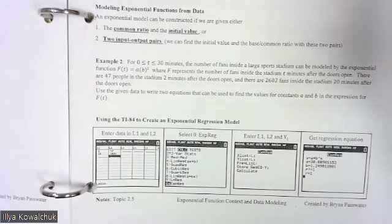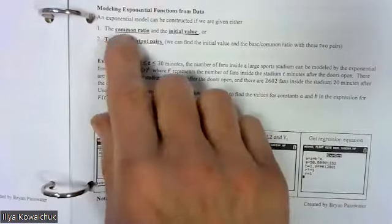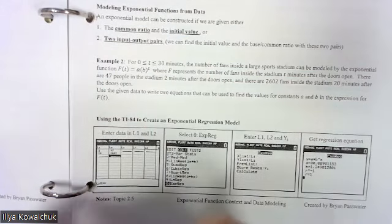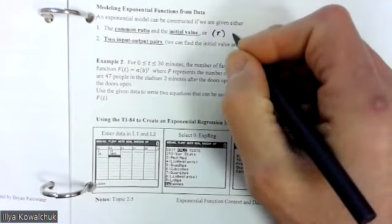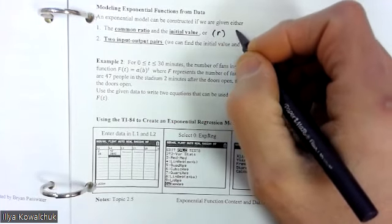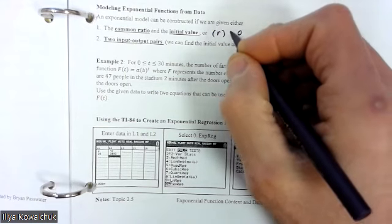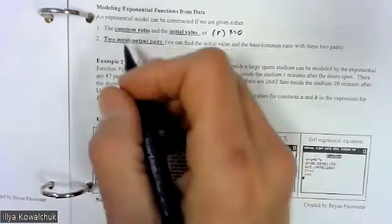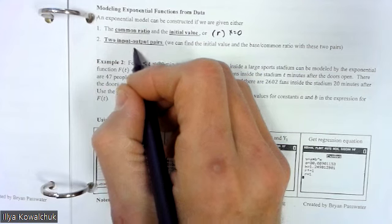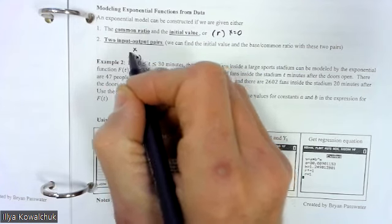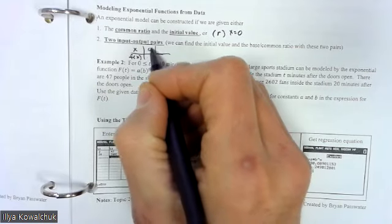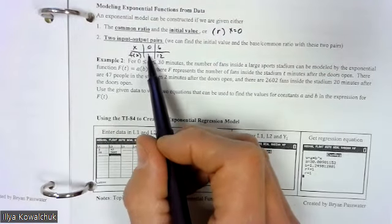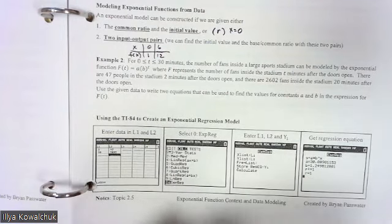An exponential model can be constructed if we're given either the common ratio r or the initial value - that's the value where x equals zero. We can also use two input-output pairs, something like x and f(x), where we might have inputs and outputs like zero and six, and one and twelve. Those are our input and output pairs.